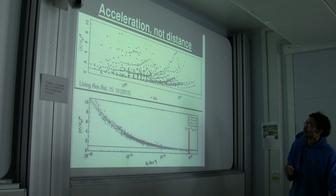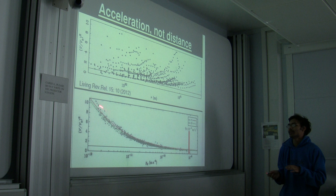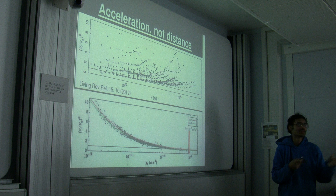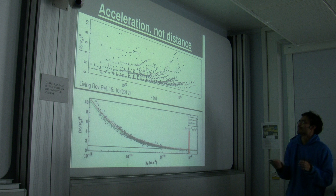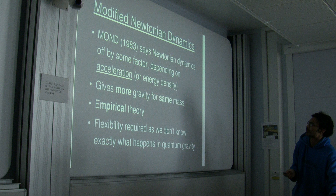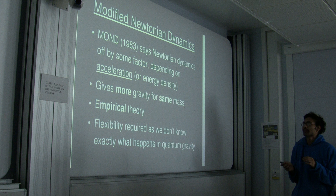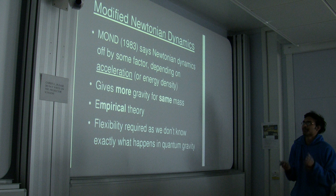If you plot for each data point not the acceleration but some other variable — like how far away that point is from the center of the galaxy — there's no correlation whatsoever. Presumably distance from a particular point isn't physically important, whereas acceleration is. You can't get this correlation any other way. This brings me to the idea of modifying Newtonian dynamics, which is going to be done in an empirical way.